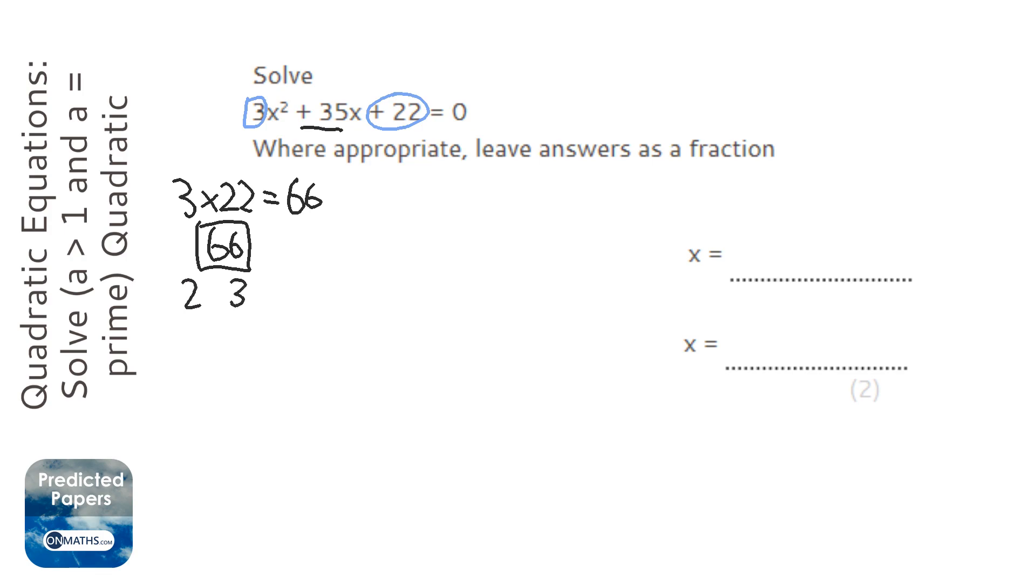So 2 and 33 looks like a good candidate. Got it first time, excellent. Then I'll write out the question again, but instead of the plus 35x, we're going to say plus 2x plus 33x plus 22 equals 0.